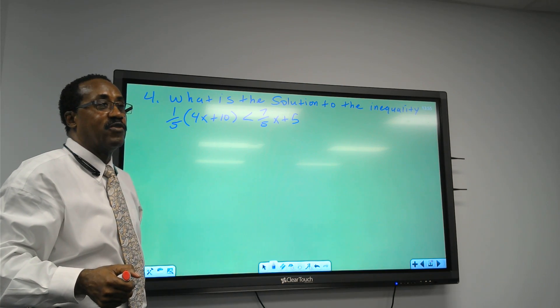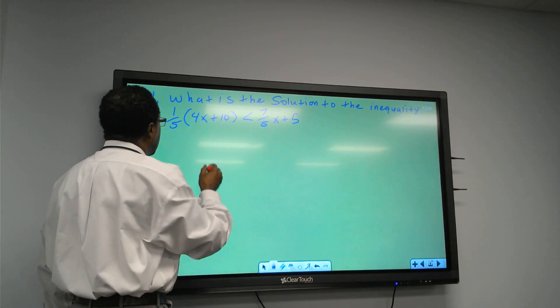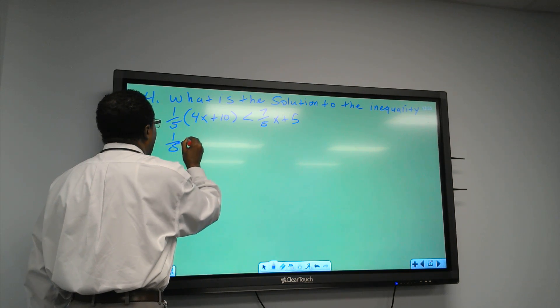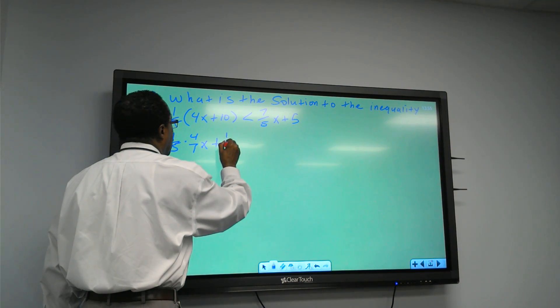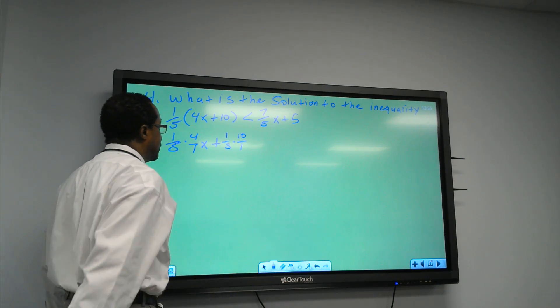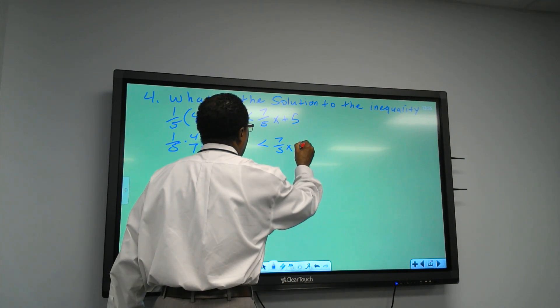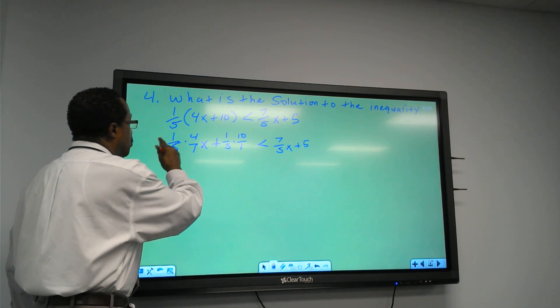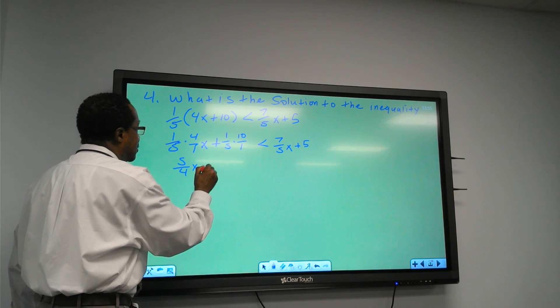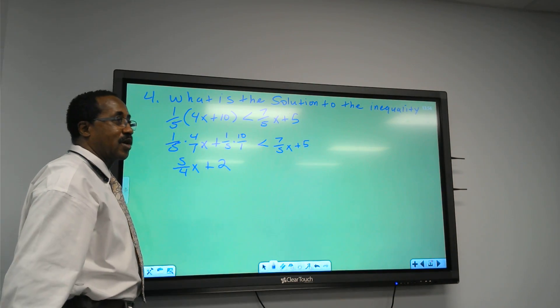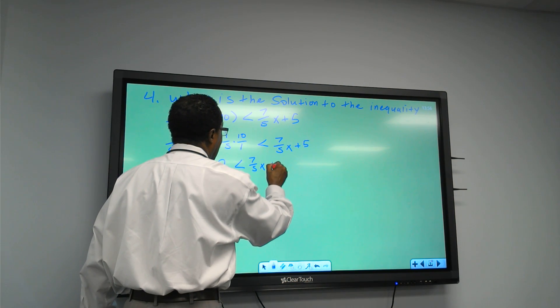Is what's inside the parentheses via distributive property. So we take 1/5 and multiply it times 4. So that means 1 over 5 times 4 over 1x plus 1 over 5 times 10 over 1 is less than 7 over 5x plus 5. Now, we go and multiply it just like we do with any other fraction. We're going to have 5 over 4x plus 2. 5 divided into 10 gives you 2 is less than 7 over 5x plus 5.